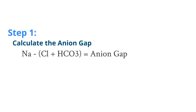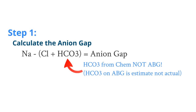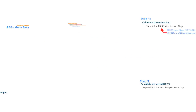So let's go over some easy steps to interpret ABGs. Step 1: calculate the anion gap. The anion gap is the chloride plus bicarbonate, taking that sum and subtracting it from the sodium from the chemistry. Remember, the bicarb that you use in this equation is from the chemistry and not the ABG, because the bicarb that appears on an ABG is actually an estimate and not the actual bicarb of the patient.